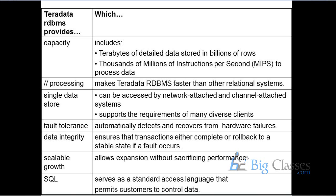Channel attached system is a mainframe client, and systems like Unix, Windows, and Solaris come under the network attached category. Data integrity is fundamental in any database, including Teradata — any transaction must either complete successfully or get rolled back to a previous safe state. That is what data integrity means, and it is supported in Teradata as well.